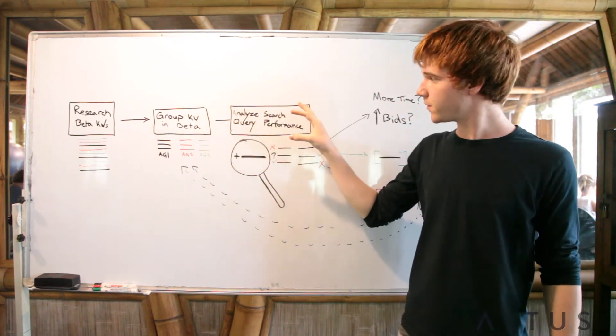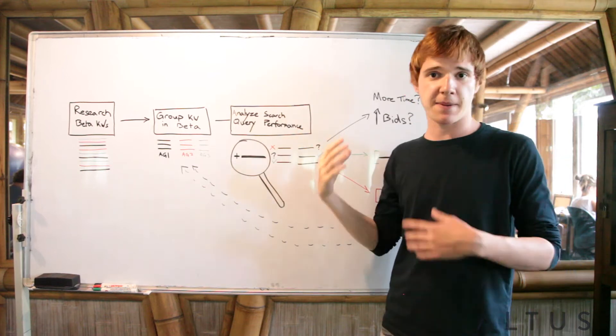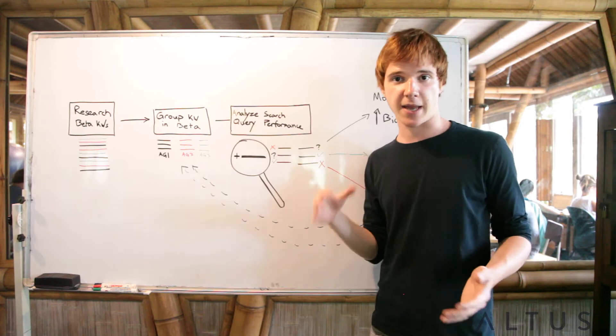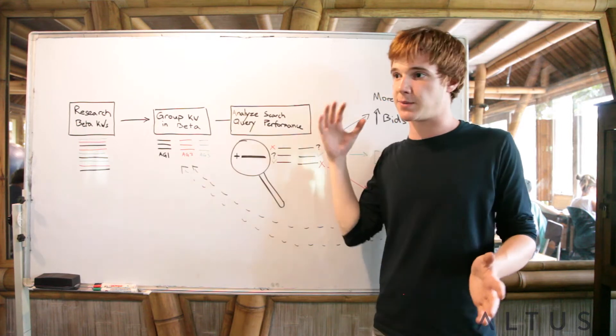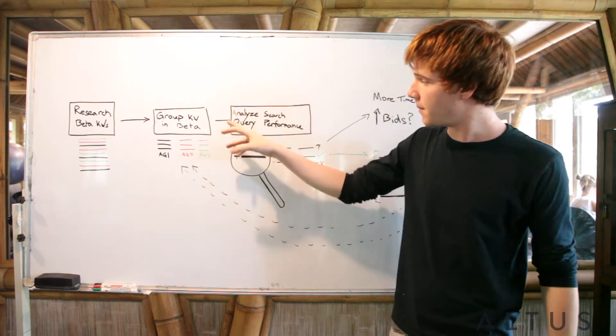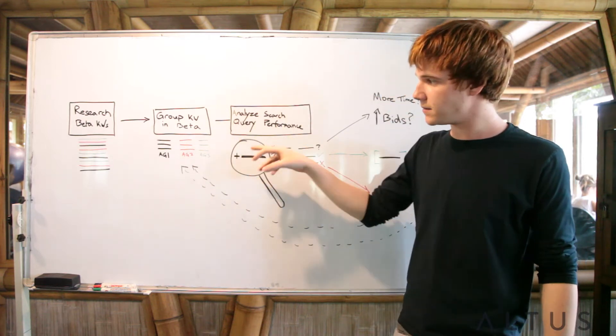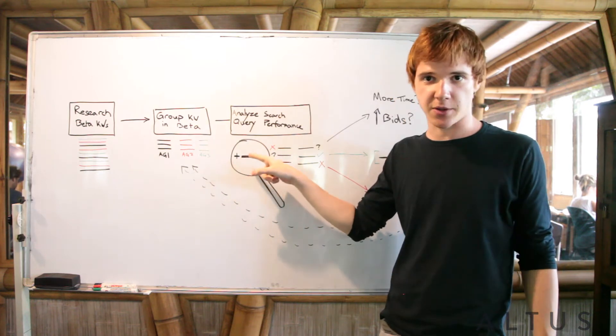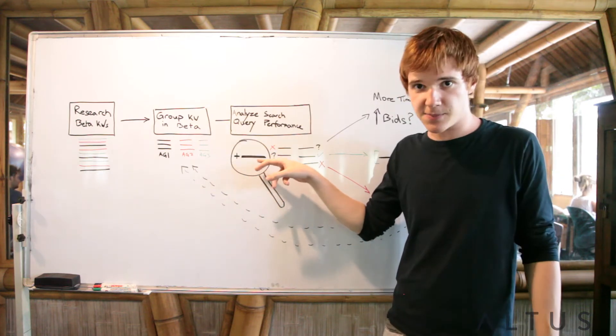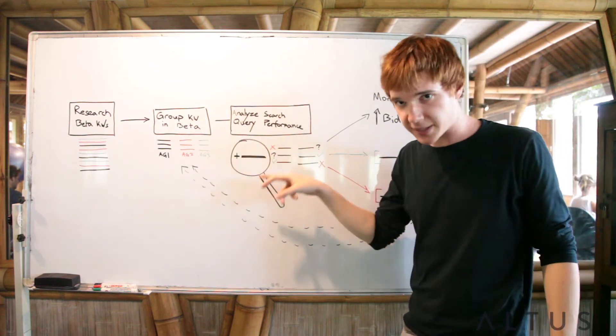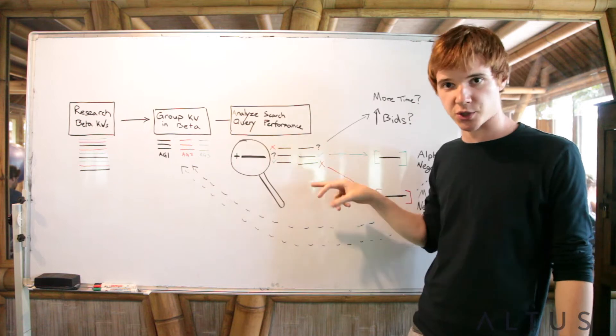Some performance data accumulates from there. Some time passes depending on what your budget is, depending on how much data volume there is. You might have to wait longer or shorter. Sometimes you can get results in a week, sometimes it takes a month and a half. We're going to look at each of these modified keywords. I put a little plus symbol there because it's the modified broad keyword. Inside these modified broad keywords, if you look at the search terms, you'll see this modified broad keyword is composed of multiple search terms.